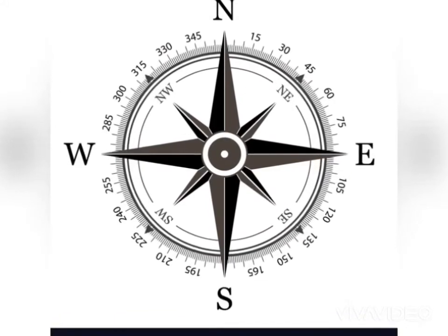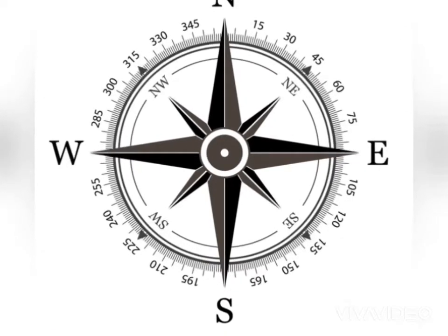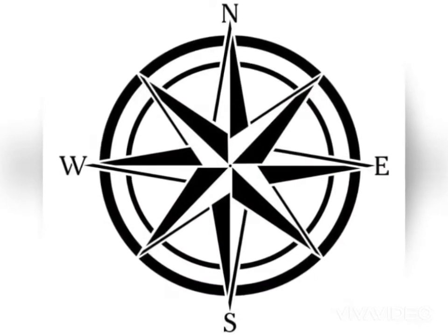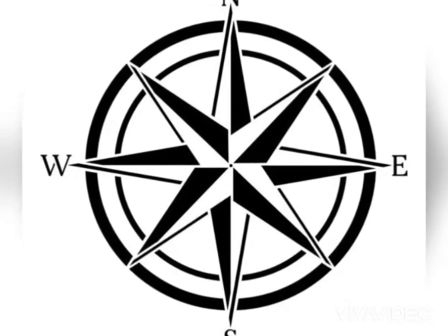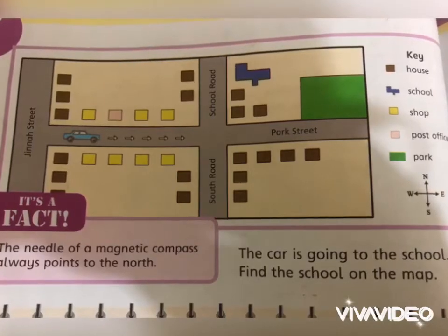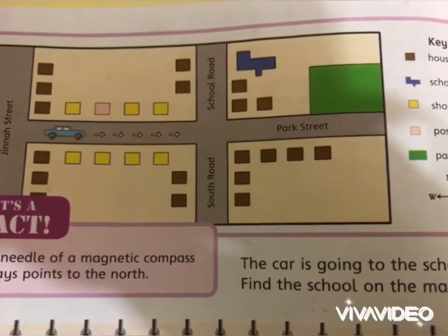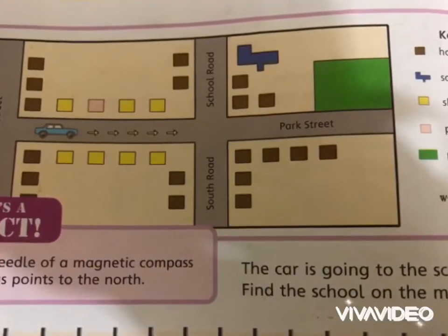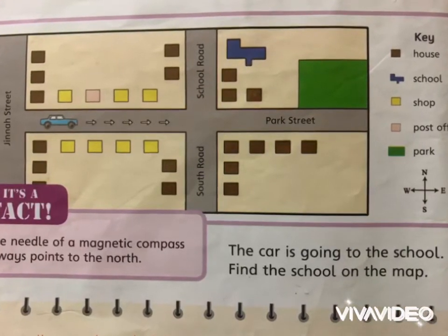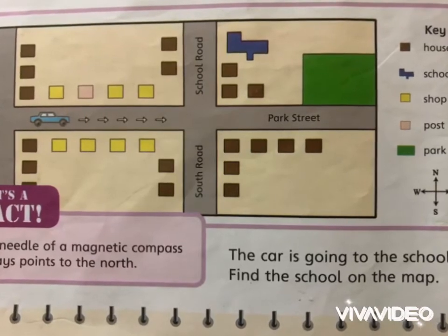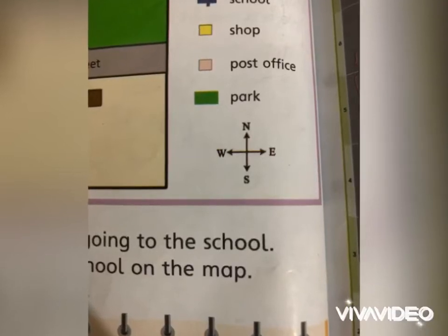The compass will help us to find our ways on a map. You can also see this on page number 32. The car is moving, and the compass is also given in the corner of this map. The car is moving from west to east direction towards school. First it is moving towards east, then it will move towards north. This compass will help you to understand the directions.